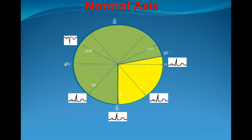Lead I points from right to left, lead II goes that way, then lead III, AVL, AVR, and AVF looking toward the foot. The normal electrical axis is illustrated as a sector from minus 30 to positive 90 degrees — some books say to 110 — and this represents the normal axis of the heart.